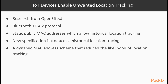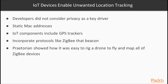Interesting research from OpenEffect in 2015 found that of all the wearable developers analyzed, only one had adopted the privacy protections associated with the Bluetooth LE 4.2 protocol. Specifically, wearable developers were still using static public MAC addresses, which could allow historical location tracking. The new specification introduced a dynamic MAC address scheme that reduced the likelihood of location tracking. This tells us that developers putting wearables on the market in 2015 were not considering privacy as a key driver. It's not just static MAC addresses either — many IoT components include GPS trackers, and others incorporate protocols like Zigbee that beacon regularly, potentially exposing their location.